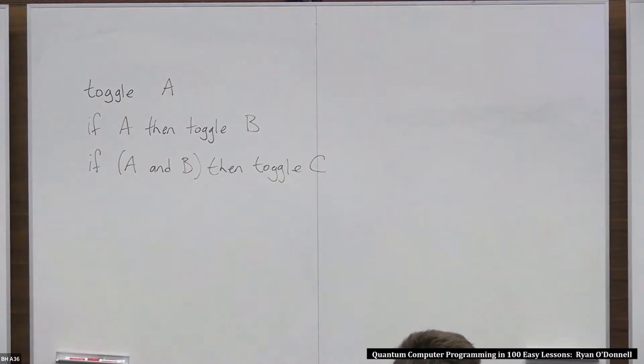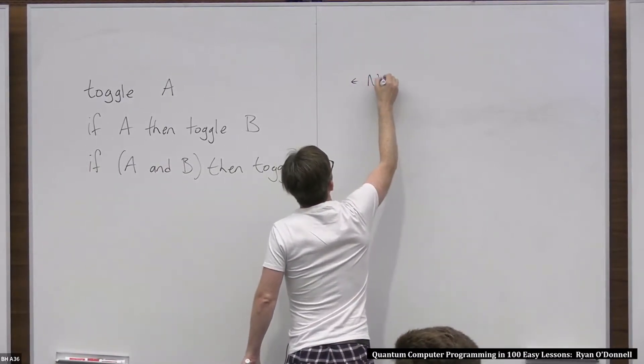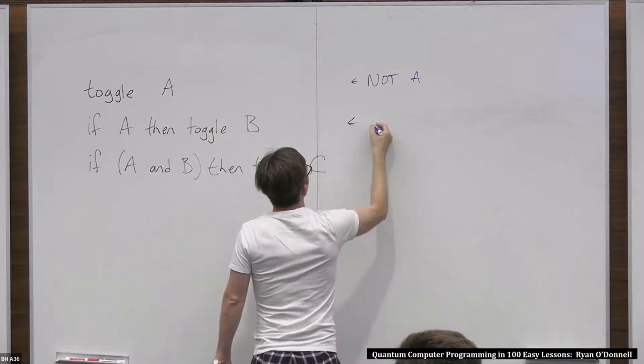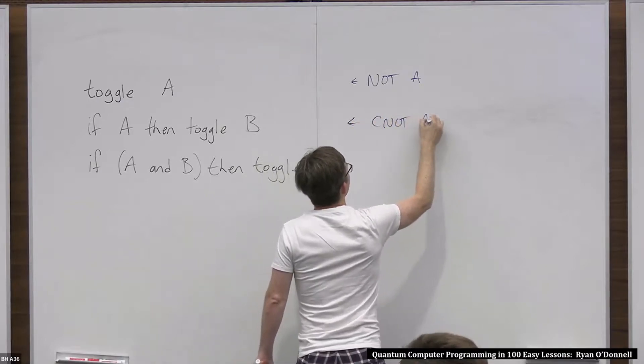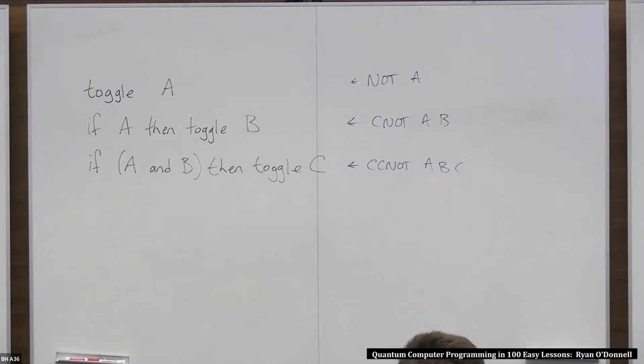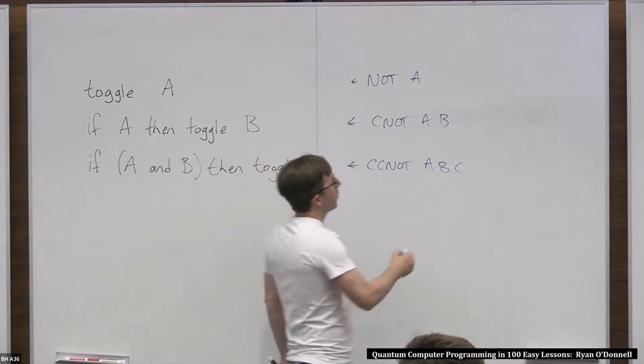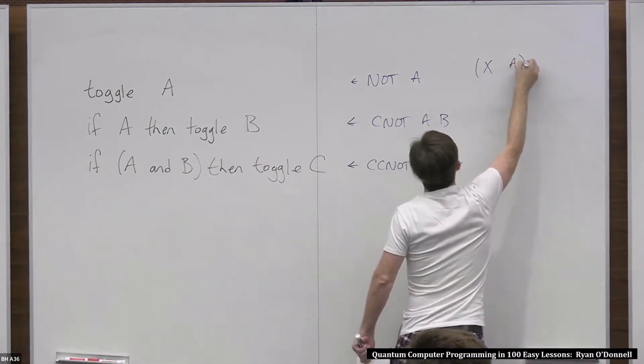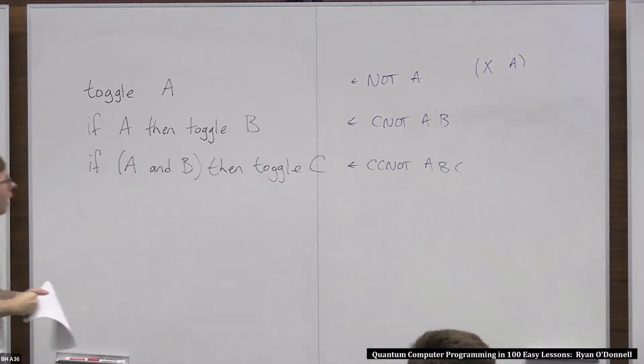As I said in the first lecture, these are actually just my personal pseudocode names for these instructions. Each of these has more official assembly language style names in quantum computing. This one is called NOT A. This one's called CNOT AB. And this one's called CCNOT ABC. So a little bit more inscrutable. This one's even more confusingly sometimes called X on A. These are the three most basic quantum instructions in this classical reversible category.